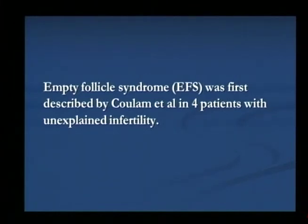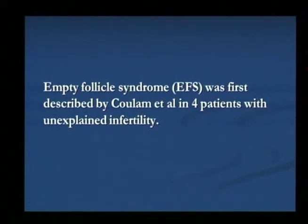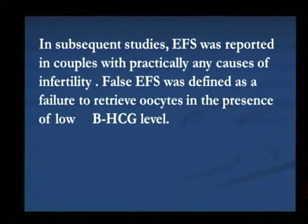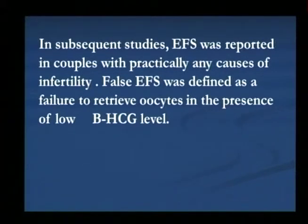It was initially reported in four patients with unexplained infertility who underwent five cycles of in vitro fertilization. It was initially viewed as an unknown cause of infertility where they did not get oocytes. Later this phenomenon was found in many other cases of infertility as well, like endometriosis and other IVF cases. This condition was described as a failure to retrieve oocytes in the presence of a low beta HCG level, where you do not get follicles from one ovary and the procedure is stopped to check the beta HCG level before proceeding.